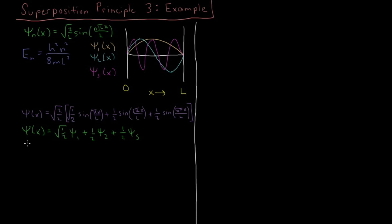If we want to calculate the expectation value for the energy of this wave function, we start with our typical angle-bracket E. We showed in the previous video that when we have a superposition of states, this becomes a sum from n equals 1 to infinity of the coefficient's absolute magnitude squared — because in general it can be complex, though all the ones chosen here are real — times the energy of the nth eigenvalue.